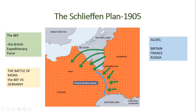Germany wanted to invade Belgium. Germany did ask permission from Belgium; however, Belgium refused to allow them to enter their country. Germany forced their way into Belgium anyway. At that time Belgium asked for help from the allies, as Belgium was a neutral country.